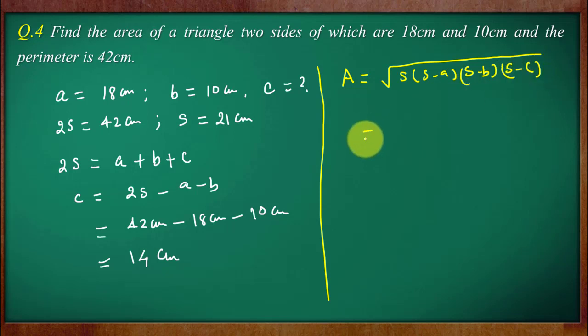Which is equal to, s value is 21 centimeter times 21 minus a that is 18 is equal to 3 centimeter, 21 minus 10 is equal to 11 centimeter and 21 minus 14 which is equal to 7 centimeter.